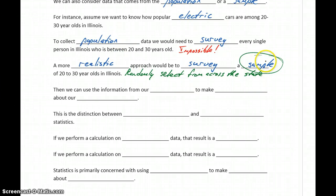It might be 1,000 people, 1,500 people, a little more, a little less, but we'll study some smaller group. Then we can use the information from our sample to make inferences about our population.